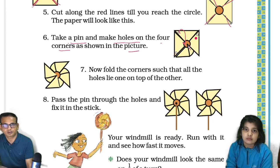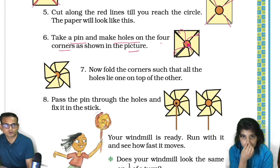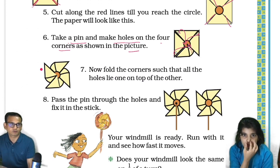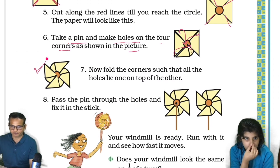Now fold the corners such that all the holes lie one on top of the other. I don't have scissors. So this one is done already in this picture. Now it will look like this if you make it like that, okay?